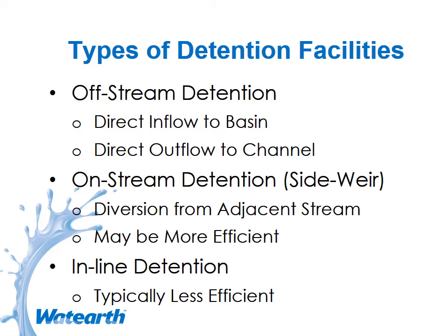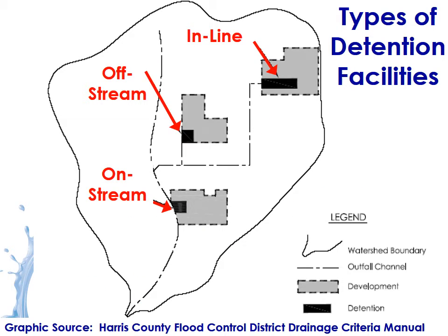Stage hydrographs are developed using rating curves, which typically come from a hydraulic model like HEC-RAS. They may also be obtained from data within the Flood Insurance Study (FIS). A rating curve is simply the water surface elevation at any given flow within the stream. From the rating curve and a runoff hydrograph, we can generate a stage hydrograph, which is basically time versus stage, representing the water surface elevation in the receiving stream.